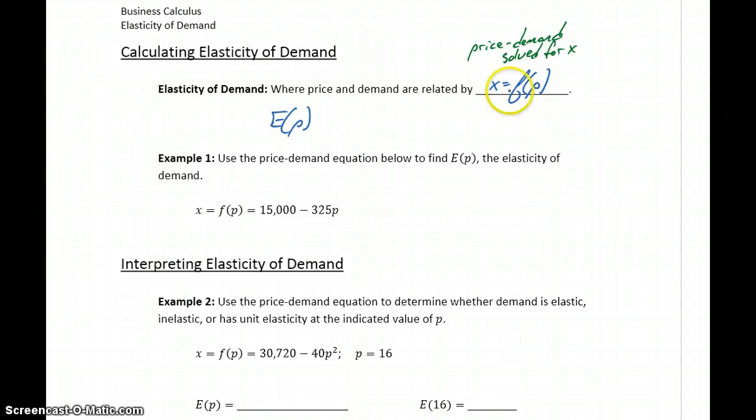As long as we have that price-demand equation solved for X, then we can calculate elasticity of demand by constructing this function: negative P times the derivative of that price-demand function divided by the original price-demand function. Once we construct this function, we can substitute in any price point to get that value for elasticity.